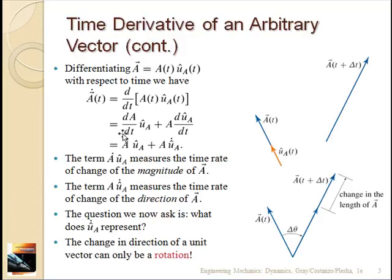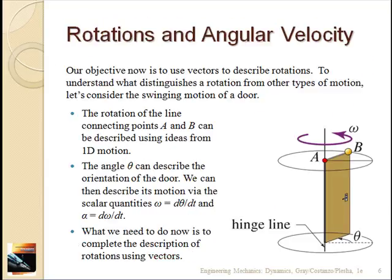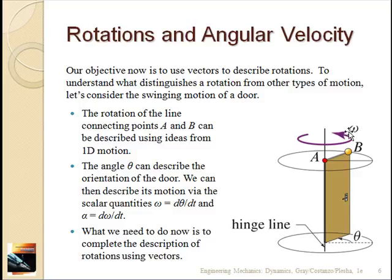We need to deal with both of these terms. The magnitude-change term is pretty straightforward; the rotation term is more complicated and takes further discussion. We can think about the rotation of a vector as a door swinging around a hinge. There's a hinge along a fixed line, and as the door rotates, point A stays fixed while point B goes around in a circle. We use theta to denote the position of the door as it rotates, and omega to denote the angular velocity of the door.